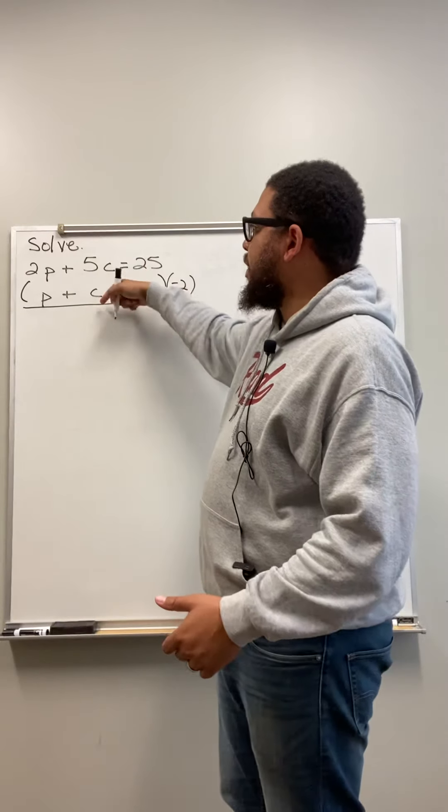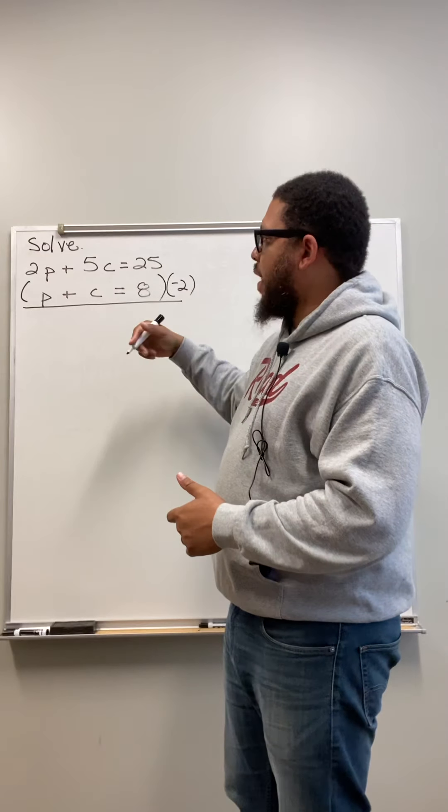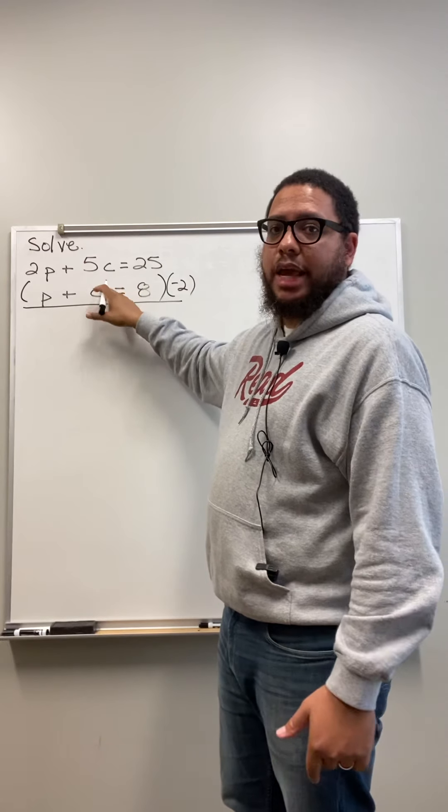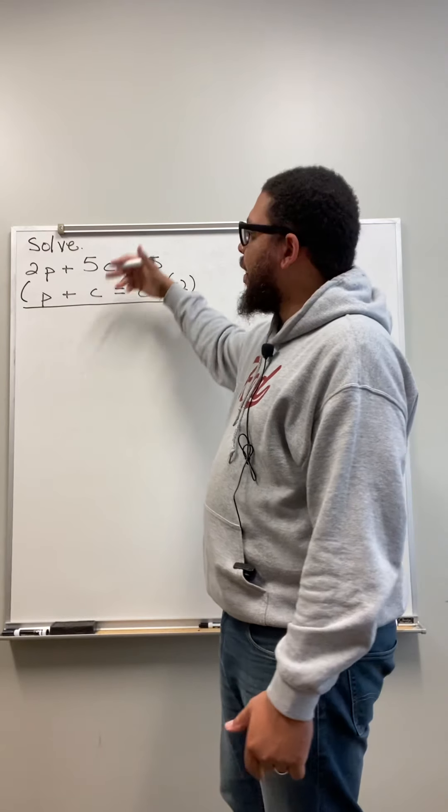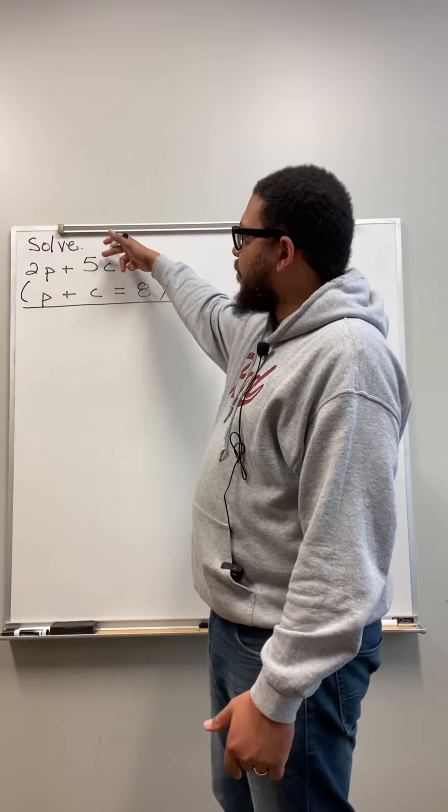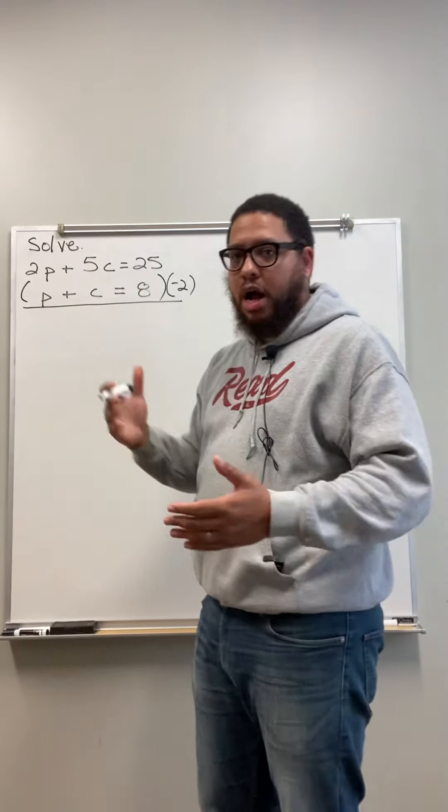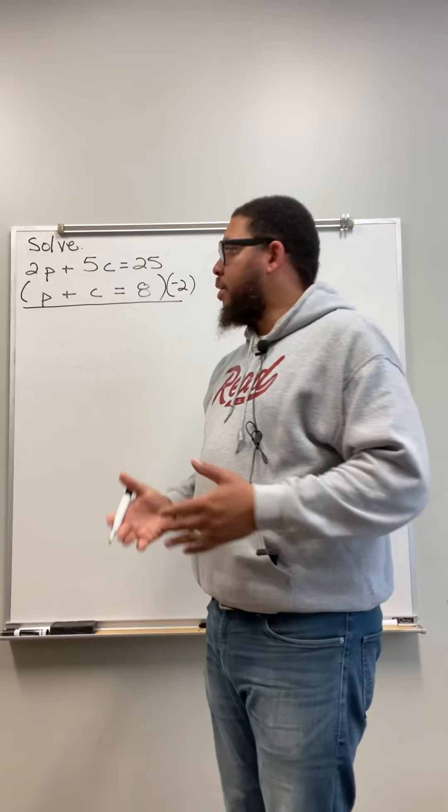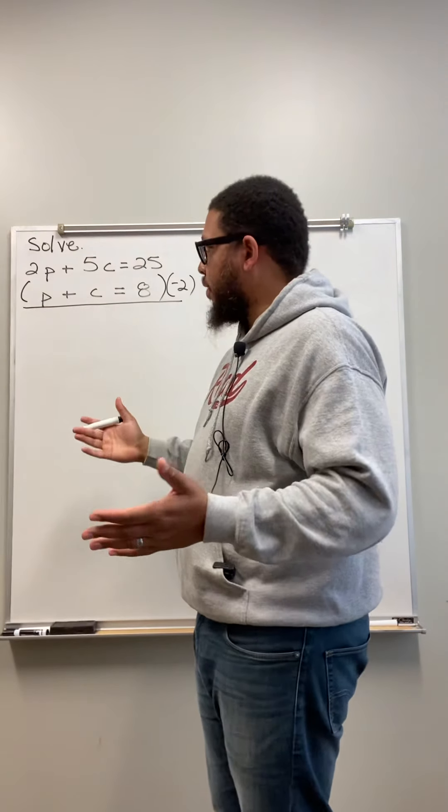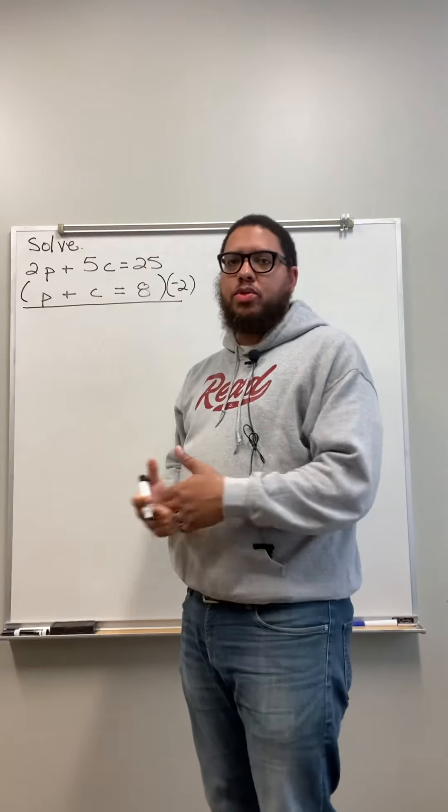Now, if I wanted to eliminate the C's, what I would have did is multiply by negative 5. Because then this C is going to turn into negative 5C. And then when I do my addition, 5C plus negative 5C, or 5C minus 5C, that cancels out and becomes zero. But I chose to cancel out my P's. No real reason why. Just because.